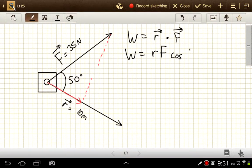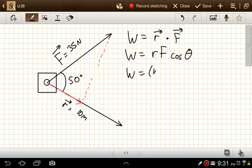Let's just keep that general for this step. And then we can plug in and we get work is equal to 10 meters magnitude of R and 35 newtons is the magnitude of F and cosine of 50 degrees, the angle between those two.